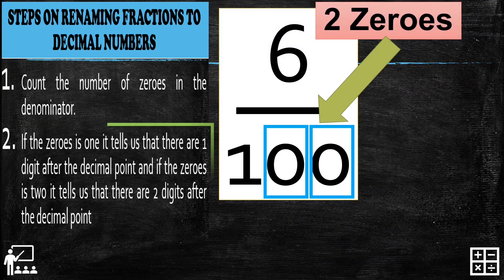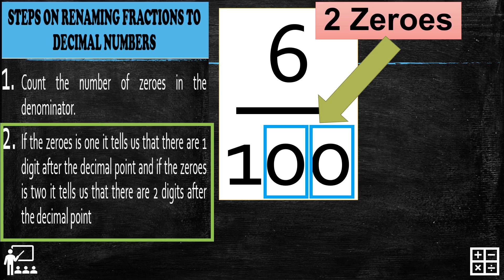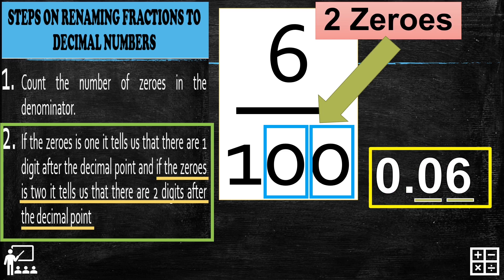Since there are two zeros on the denominator, we proceed: if the zeros is 2, it tells us there are two digits after the decimal point. So my answer for this example is 0.06. As you can see, there are two digits after the decimal point — 0 and 6. Notice there is only one digit in the numerator, so we add 0 as a placeholder for the tens place, giving us 0.06.